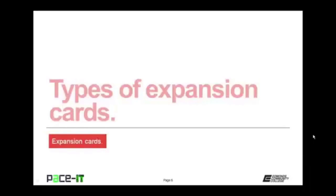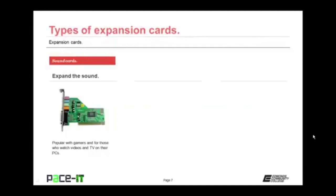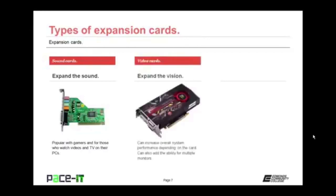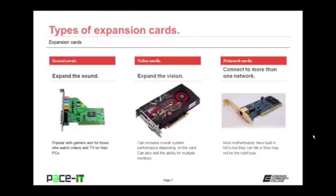Now let's briefly touch on different types of expansion cards. Sound cards expand the sound capabilities of your PC — popular with gamers and those who watch videos on their PCs. You can go from mono to stereo to surround sound. Video cards can increase overall system performance and add the ability to connect multiple monitors — they take workload off the CPU and transfer it to the video card. Network cards: most motherboards have built-in network cards nowadays, but they can fail or may not connect to the right type of network in your situation.